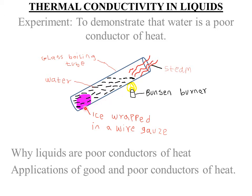A student should also note that the ice is wrapped in a wire gauze to ensure that it does not float. The purpose of the wire gauze in this experiment is to confine or restrict the ice at the bottom of the glass tube.